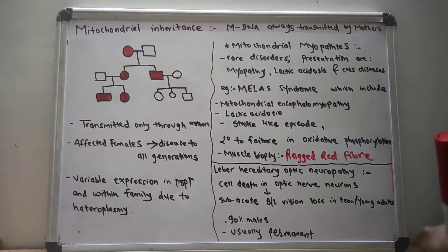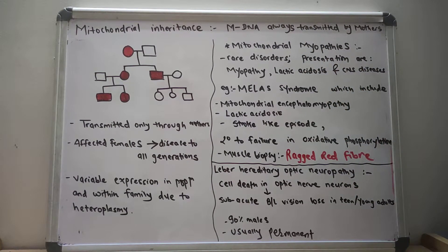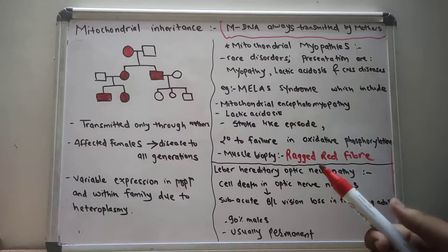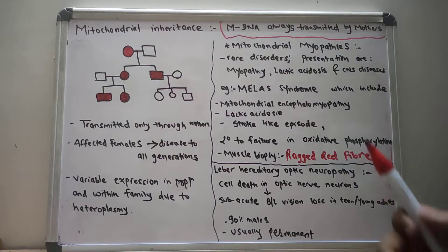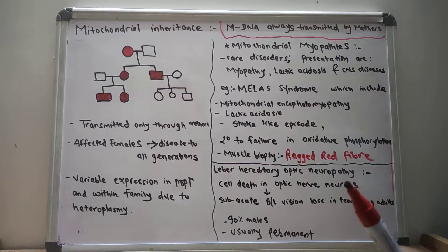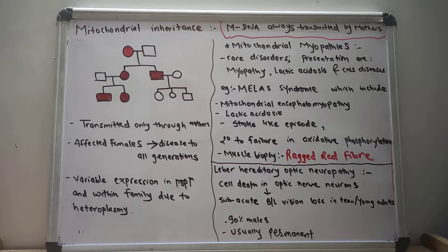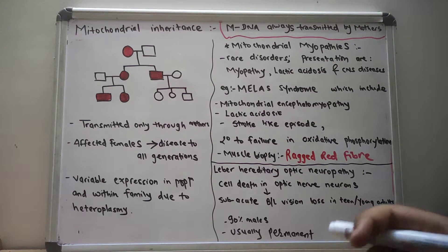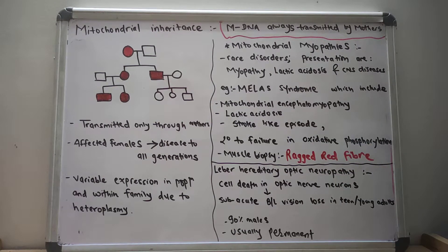There is some DNA present in the mitochondria — that is the basic concept. The mitochondrial DNA is always transmitted by the mother. So if there is a female and a male and there is some progeny, the mitochondrial DNA is from the mother only. There is no expression of the mitochondrial DNA in the child by the father.